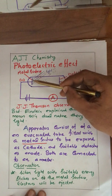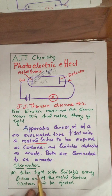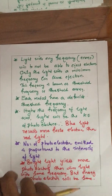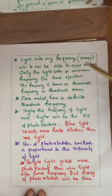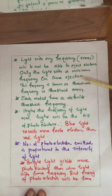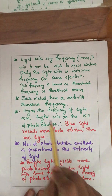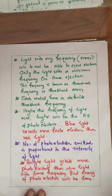These are very important observations from this experimental model. First: when light with suitable energy strikes a metal surface, electrons will be ejected. Second: light with any frequency will not be able to eject electrons — only light with a minimum frequency can cause ejection. This frequency is known as threshold frequency or threshold energy, and each metal has a definite threshold frequency. Higher the frequency of light used, higher will be the kinetic energy of electrons.